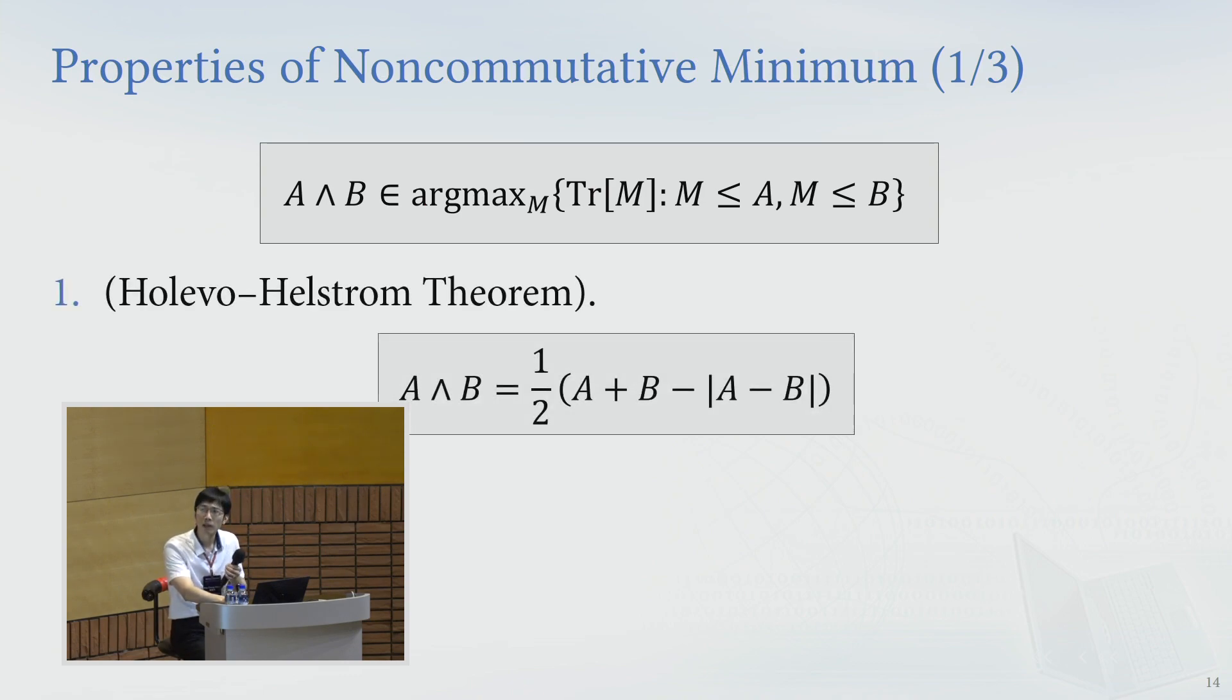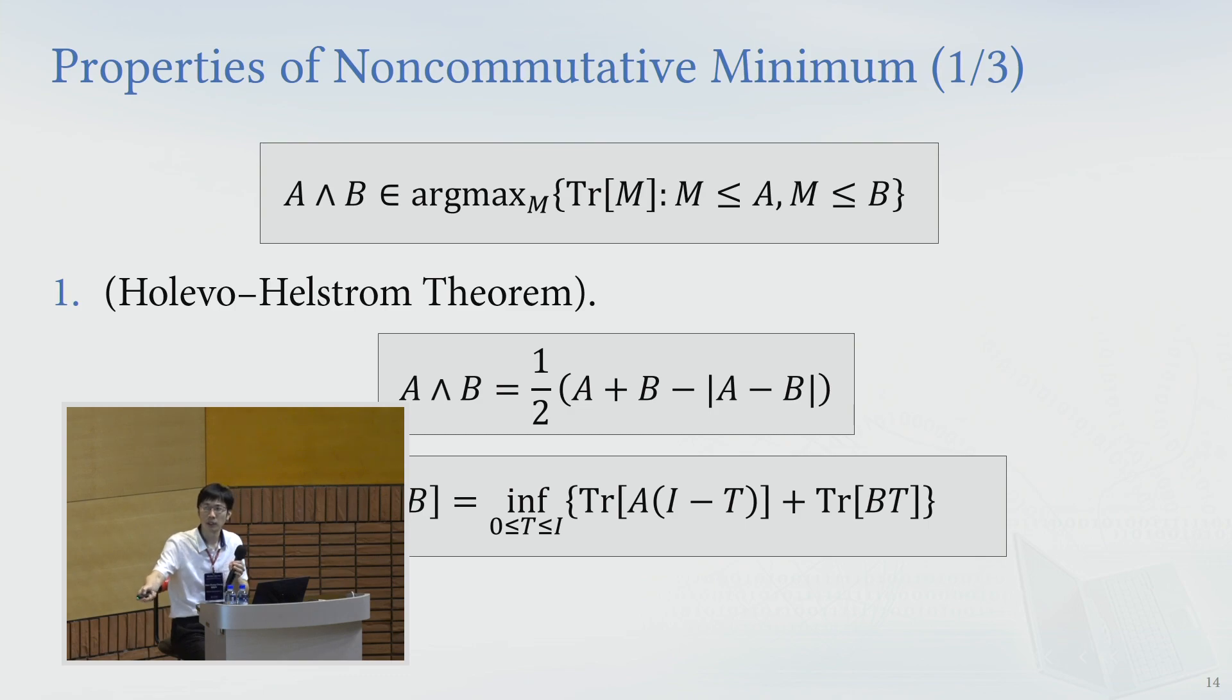Then the Holevo-Helstrom theorem in the 60s already showed that this non-commutative minimum is unique, so it's actually unique and has a closed-form expression. So this is the matrix absolute value. Then the trace of this quantity actually corresponds to the optimal error in binary hypothesis testing.